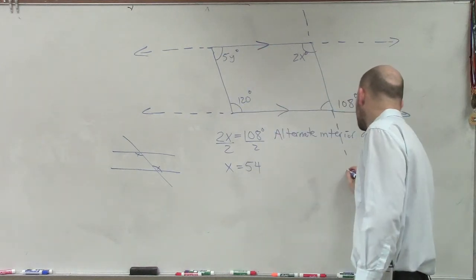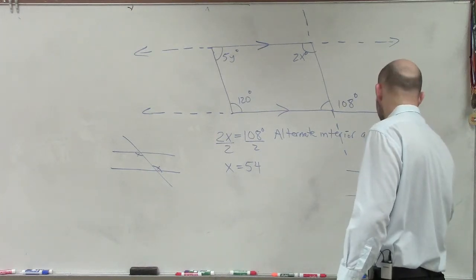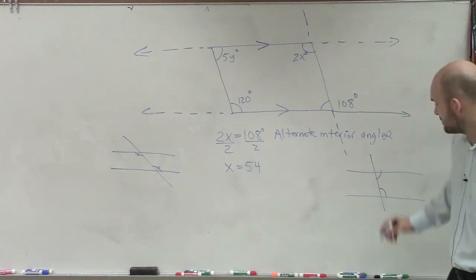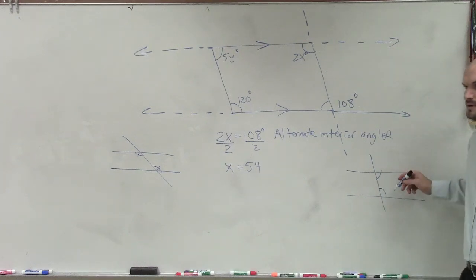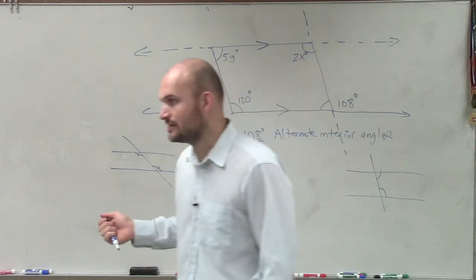So I'll go back and just draw us a random parallel lines and say, all right, I have two angles that look like this and like that. And Blake, do you remember what these angles, what we called them? Consecutive interior angles. Consecutive interior angles. And do you remember what the relationship was of consecutive interior angles?